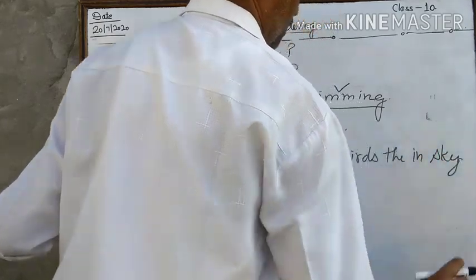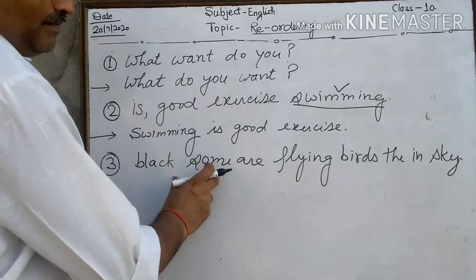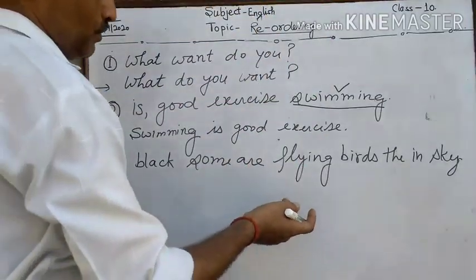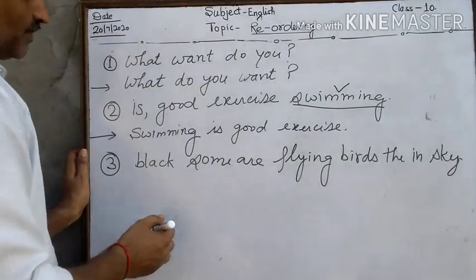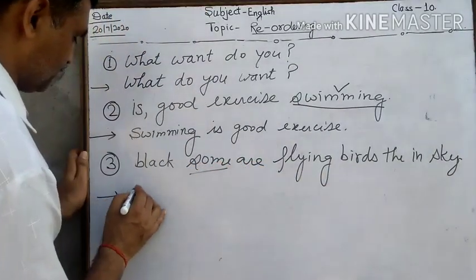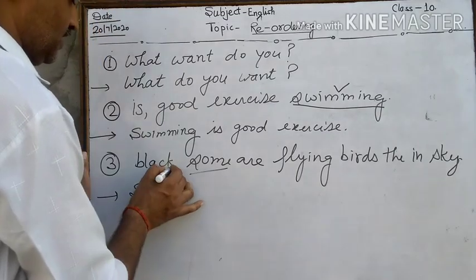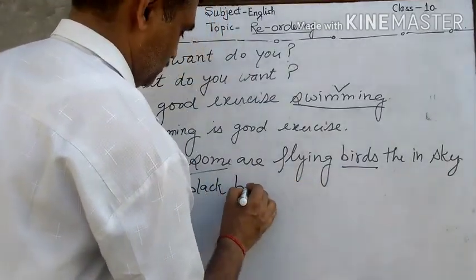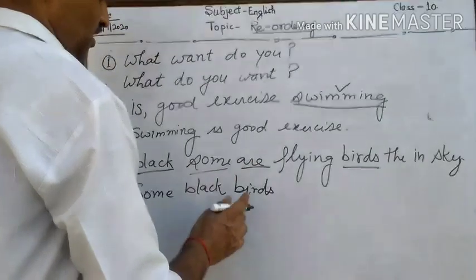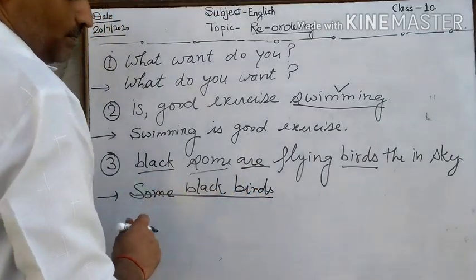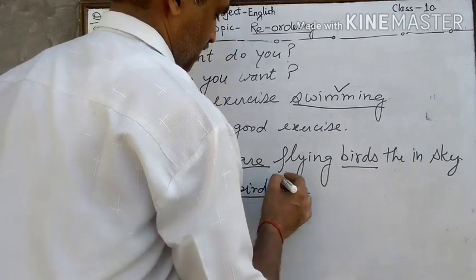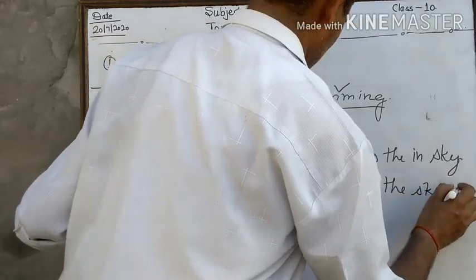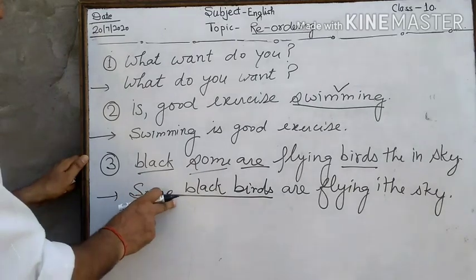There are many parts of a sentence - subject and predicate. You shall put subject part first. The main words are the subject part, verb is predicate part. Some black words are flying in the sky. Students, correct sentence: some black words are flying in the sky.